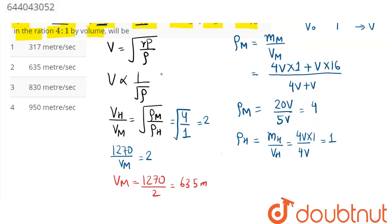Hence the velocity in the mixture comes as 1270 divided by 2, which comes as 635 meters per second. This means option number 2 is the correct answer.